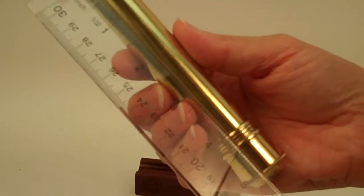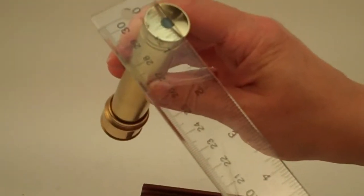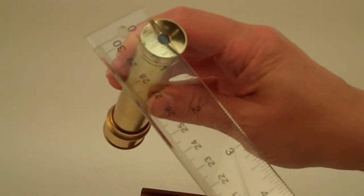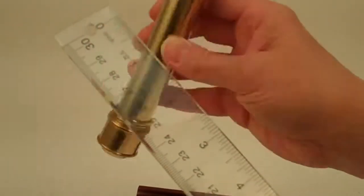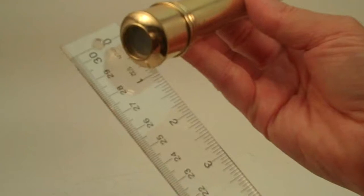The kaleidoscope itself measures five and a quarter inches in length, a diameter at the eyepiece of approximately seven eighths of an inch, and a diameter across the object chamber right at one inch.